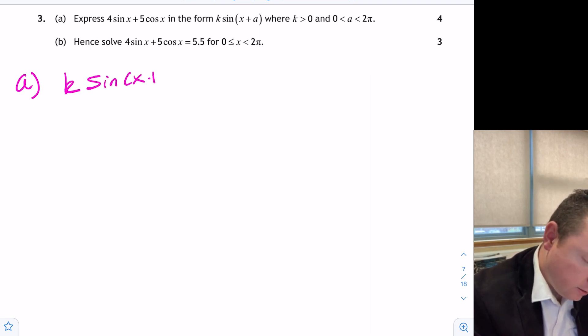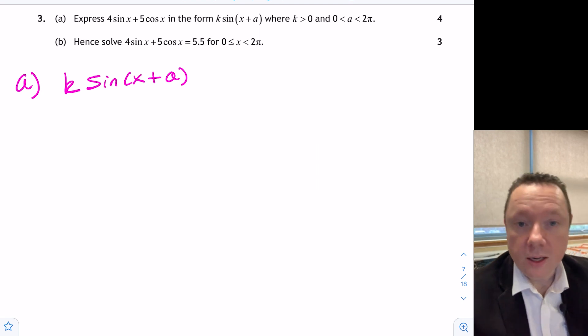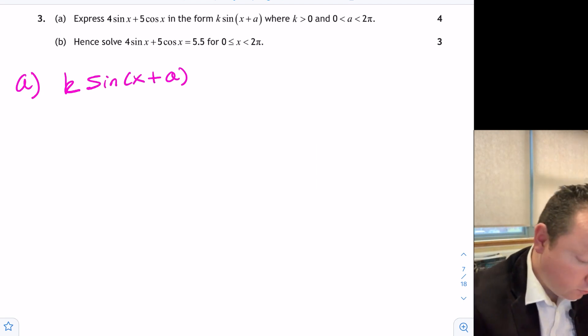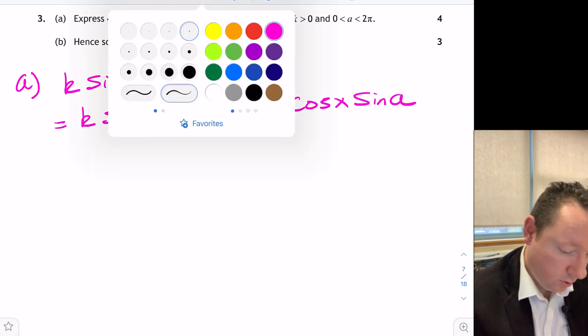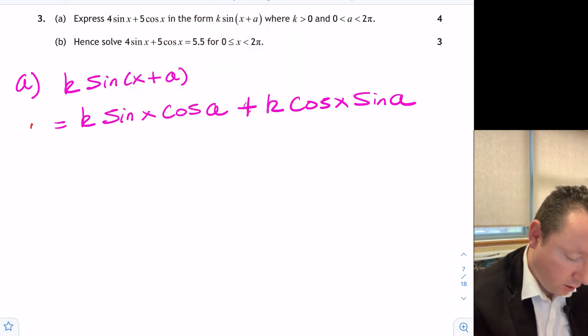We can expand from the addition formula for sin using the start of the exam paper. We've got k times sin x cos a plus k times cos x sin a. There's a mark there just for writing down from the start of the exam paper.